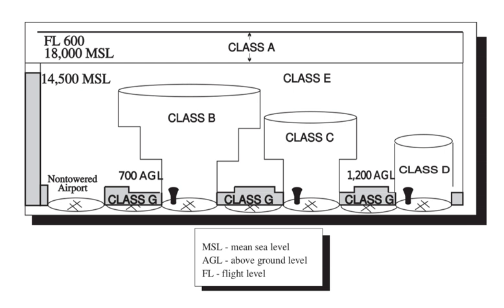Note, these are the ICAO definitions. Country-specific adaptations such as 'two-way communications' instead of 'clearance' for Class C in the US are discussed in the sections below. Class A – All operations must be conducted under IFR. All aircraft are subject to ATC clearance. All flights are separated from each other by ATC. Class B – Operations may be conducted under IFR, SVFR, or VFR. All aircraft are subject to ATC clearance. All flights are separated from each other by ATC.